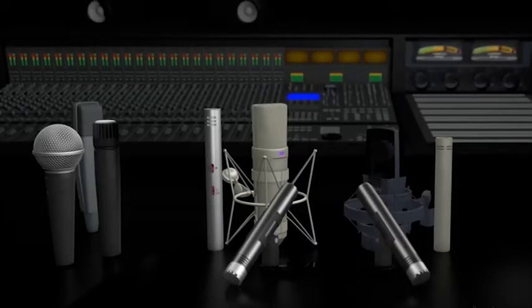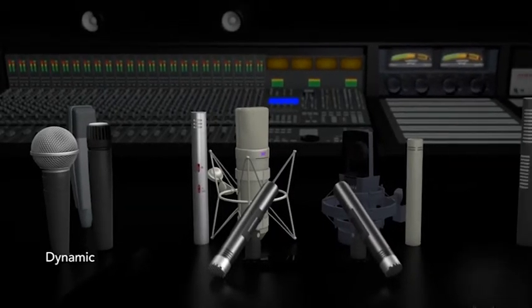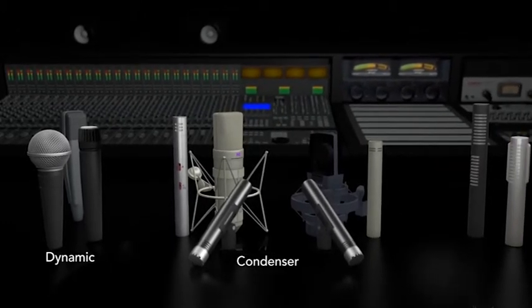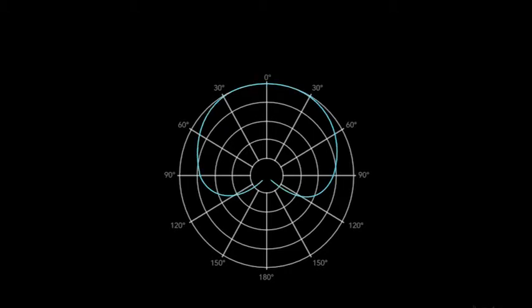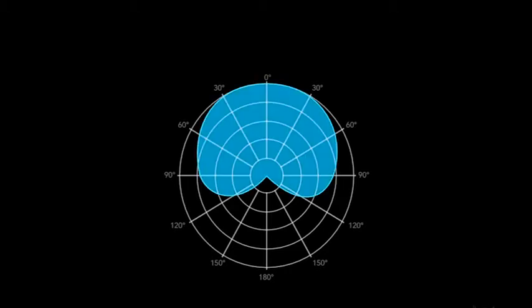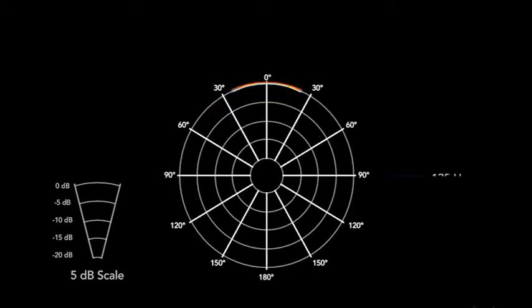The directional response of a microphone is the way the microphone responds to sounds coming from different directions around it. That is determined by the way the case of the mic is designed and, in condenser mics, the number of diaphragms it contains. The directional response of a microphone is recorded on what's known as a polar diagram, sometimes described as the polar pattern. This polar diagram shows the signal pickup levels, sometimes shown in decibels, from all angles at different frequency ranges.